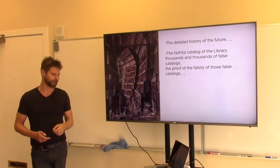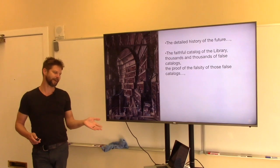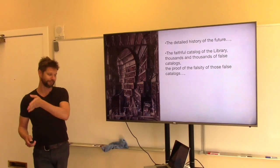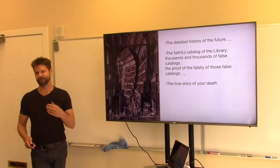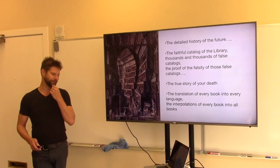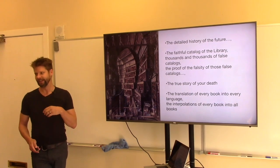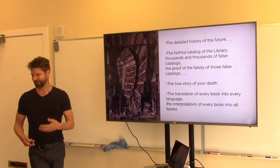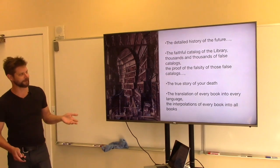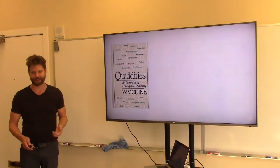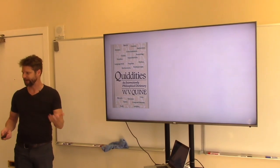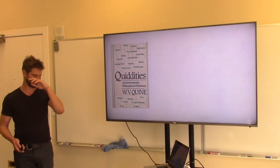The story trips out on all the weird stuff that must be in there: a detailed history of the future, a faithful catalog of the library, thousands of false catalogs, the proof of the falsity of those false catalogs, the true story of your death, the translation of every book into every language, the interpolations of every book into all books. It's a great little philosophical object and a beautiful story with a lot of mathematical value.